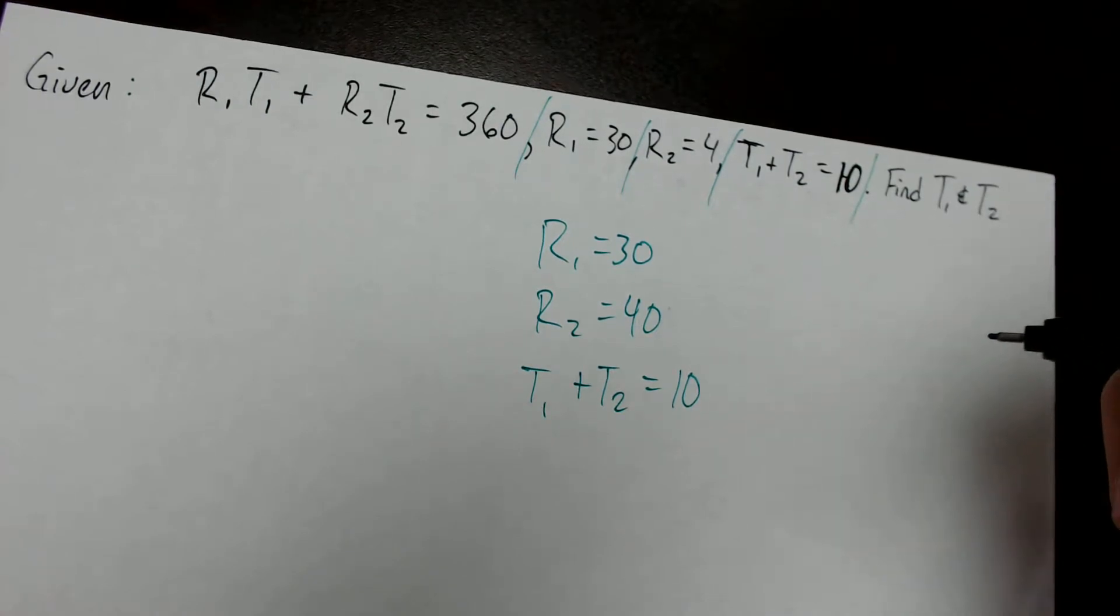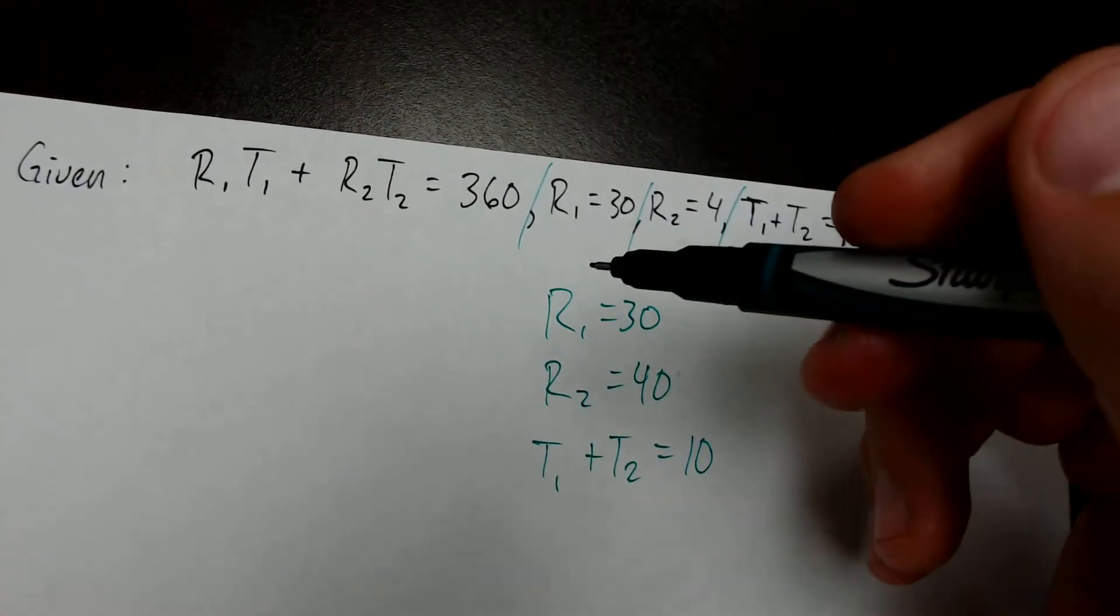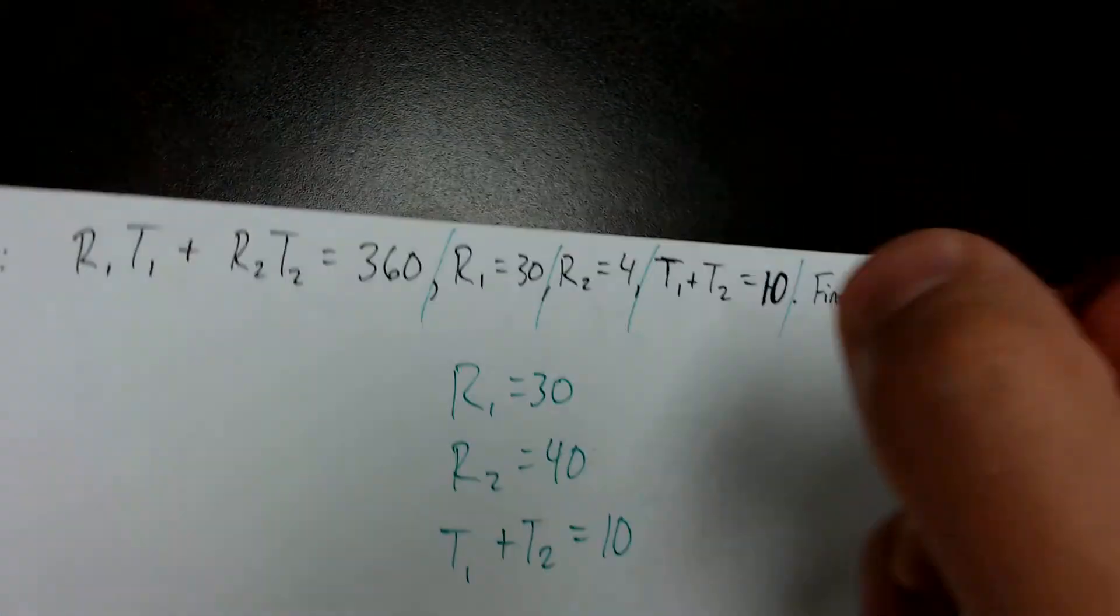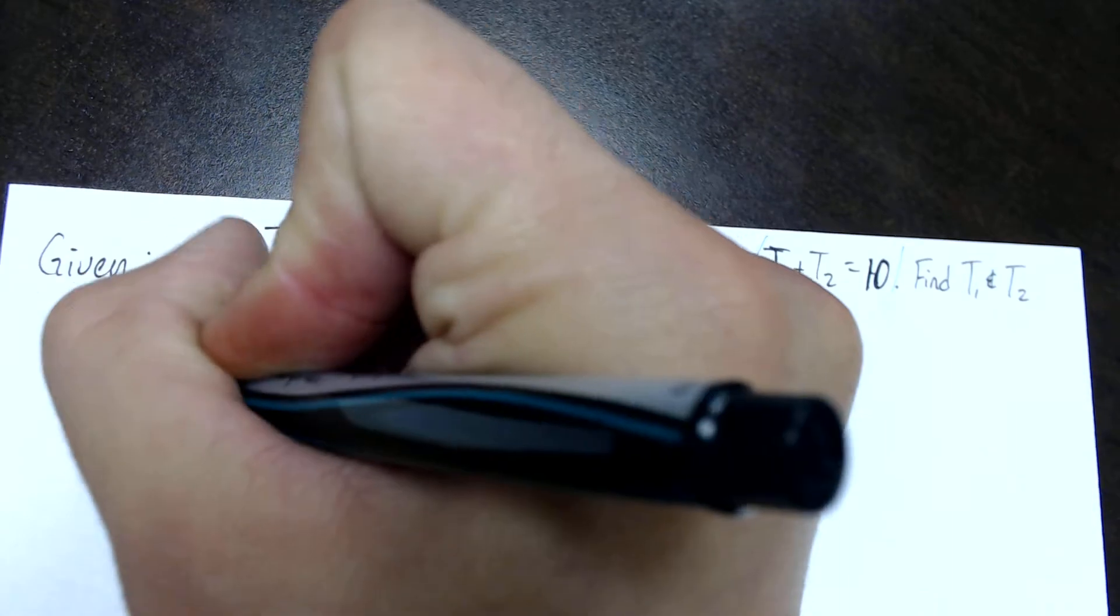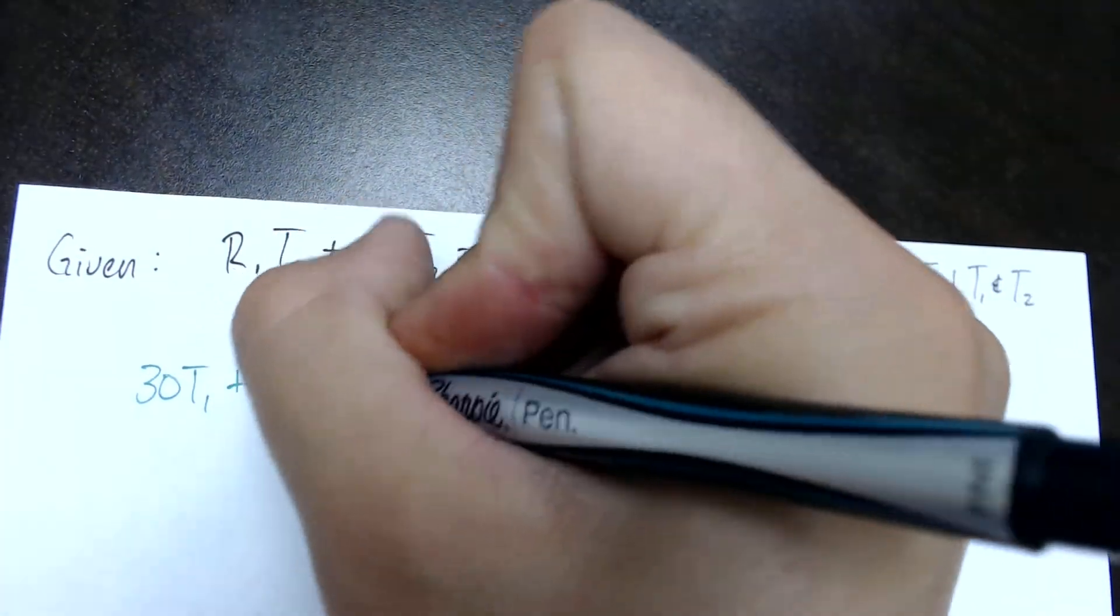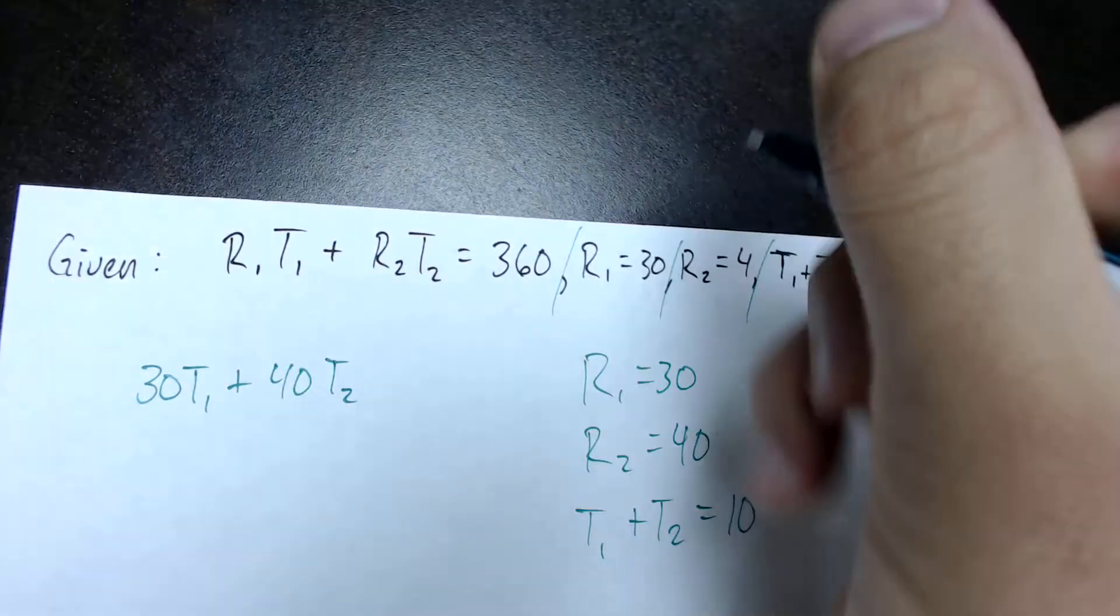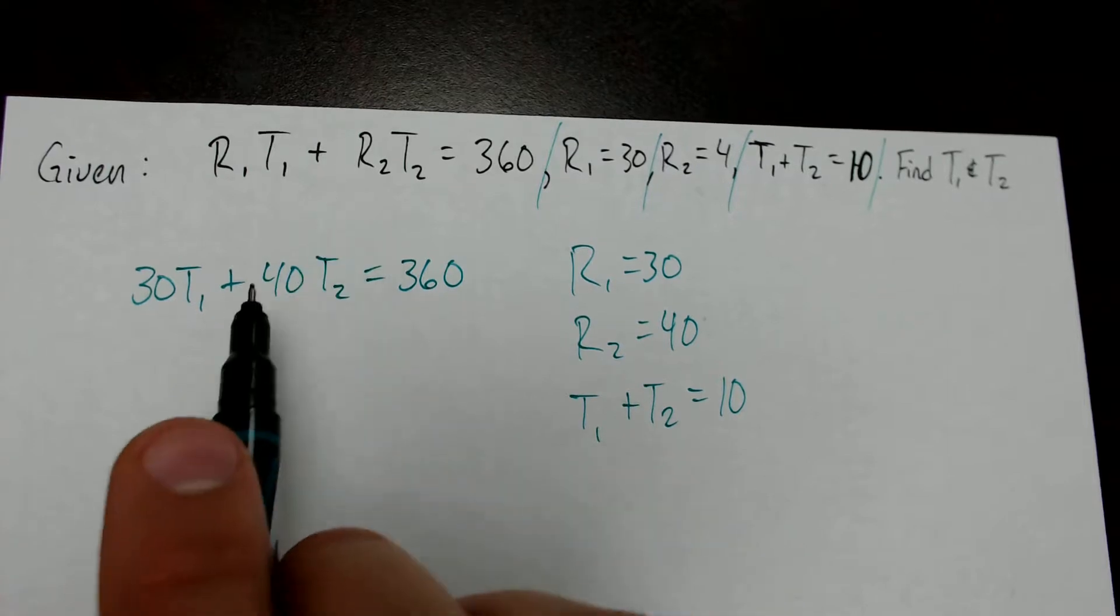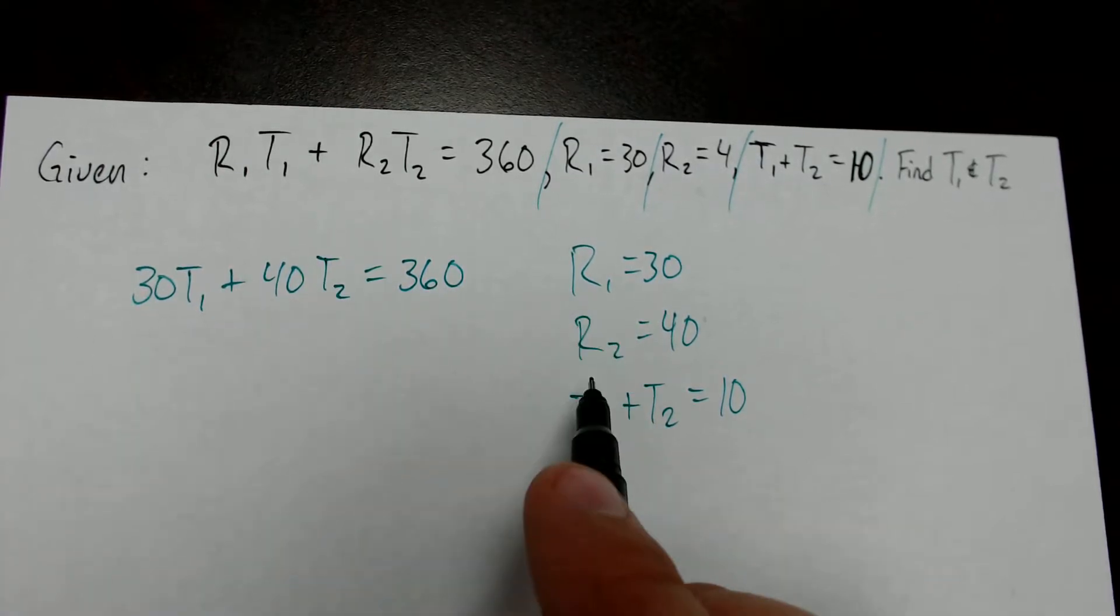We can substitute R1 and R2 very quickly. So I can rewrite this as 30 times T1 plus 40 times T2 equals 360. That's the first substitution I'm going to do. I rewrote this first equation down here, filling in these and these.